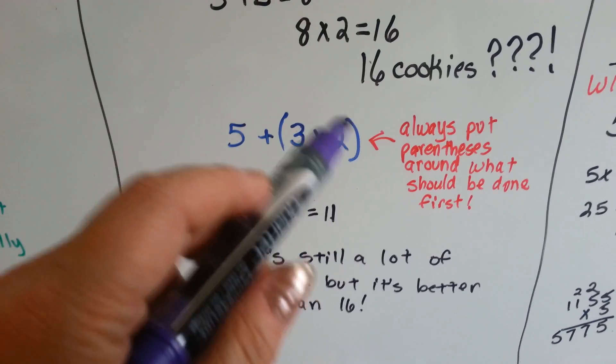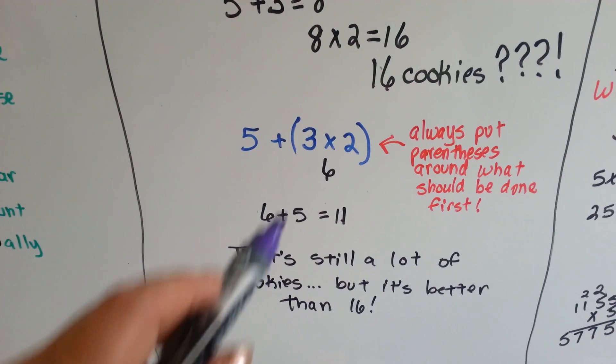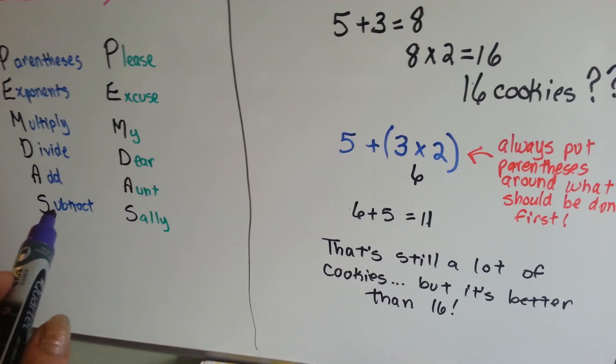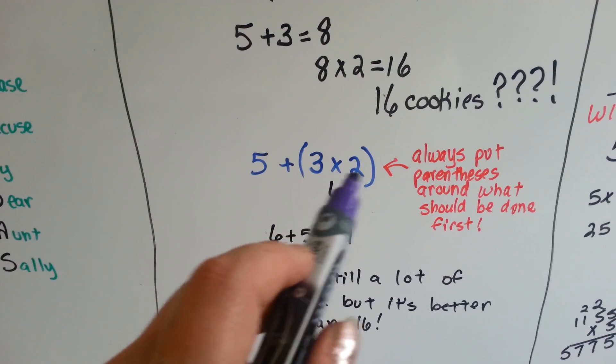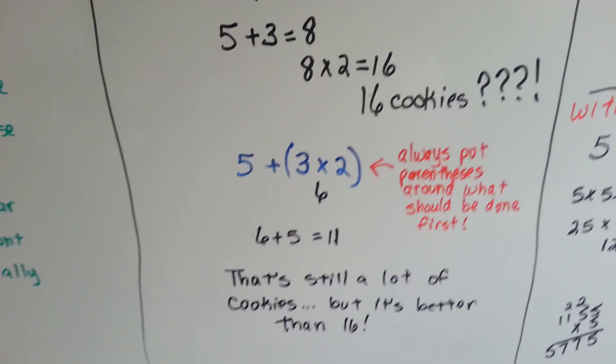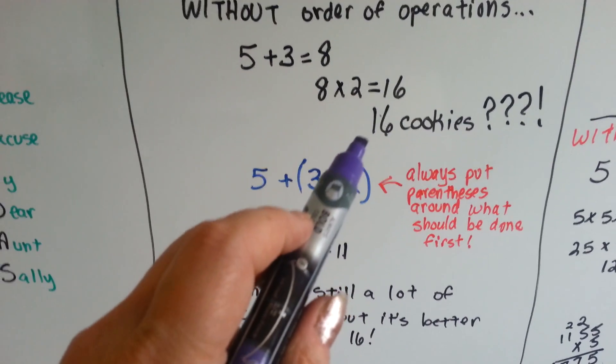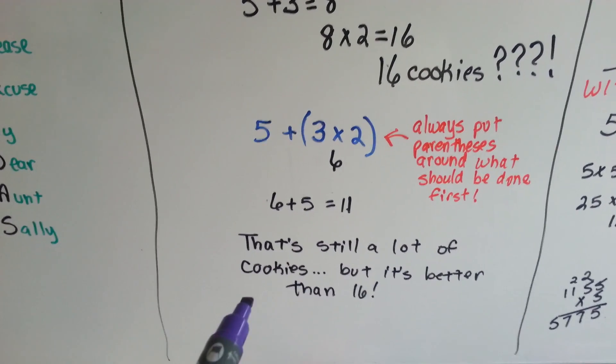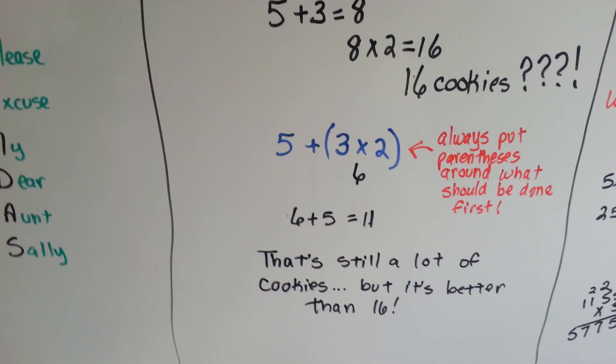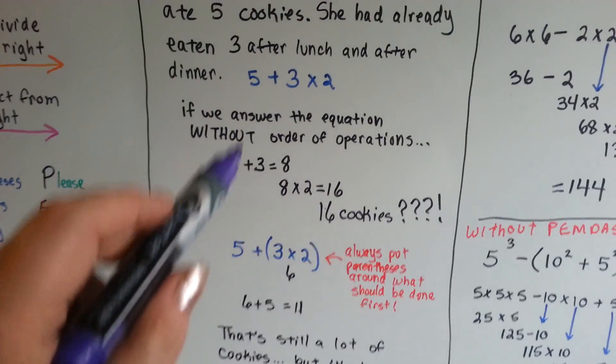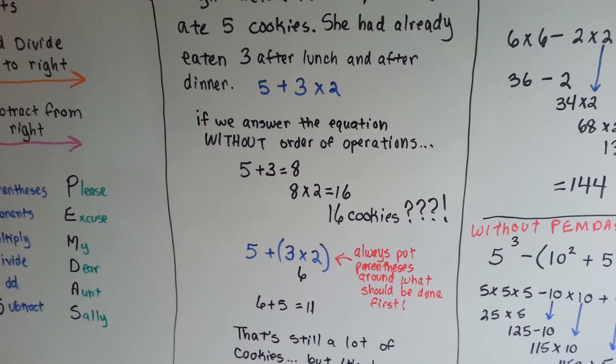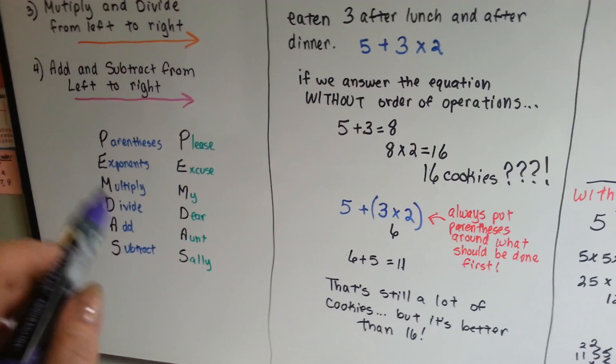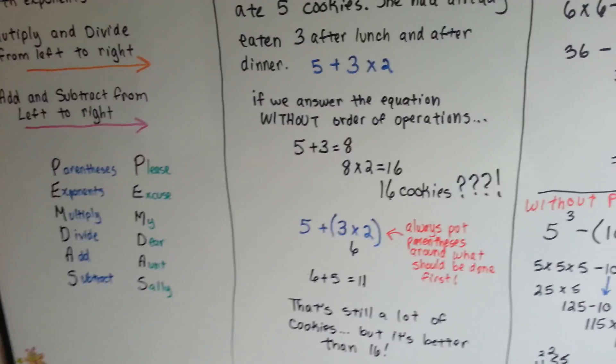We put the parentheses around what's supposed to be done first, and we multiply before we add. We always do that. 3 times 2 is 6 plus the 5. She had 11. Now, she didn't have 16 cookies like you would have thought she did. She had 11, which is still a lot of cookies, but it's better than 16. So, see what happens? Just because we didn't put parentheses around that, and we added before we multiplied, which is a no-no. You're supposed to multiply first.